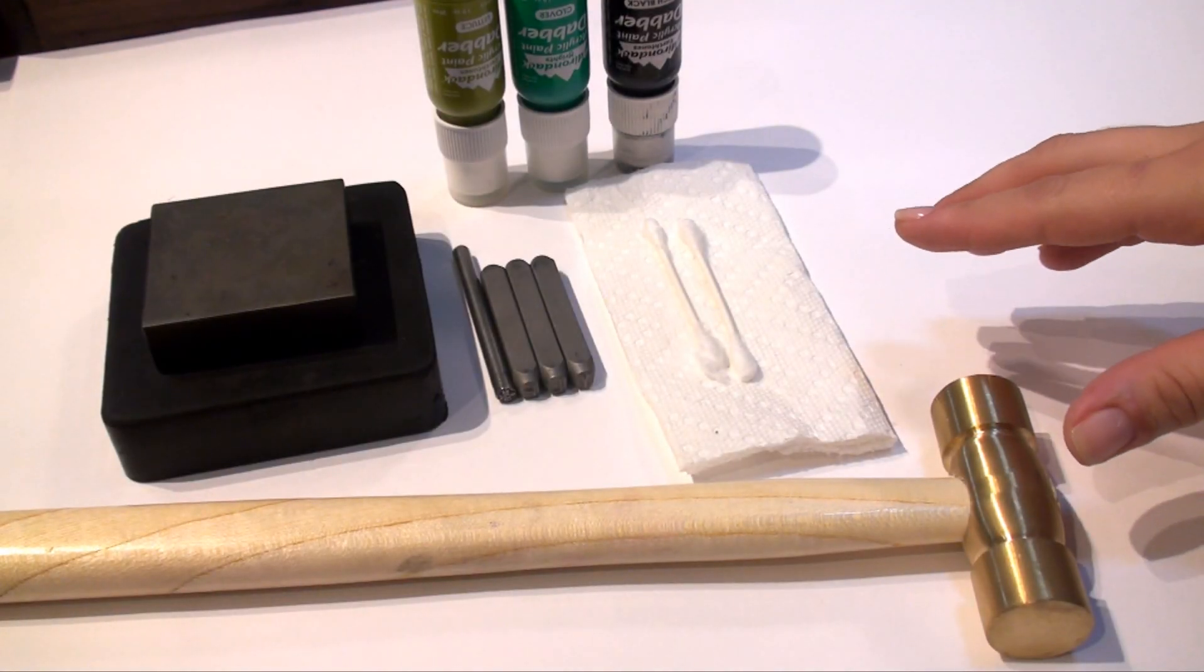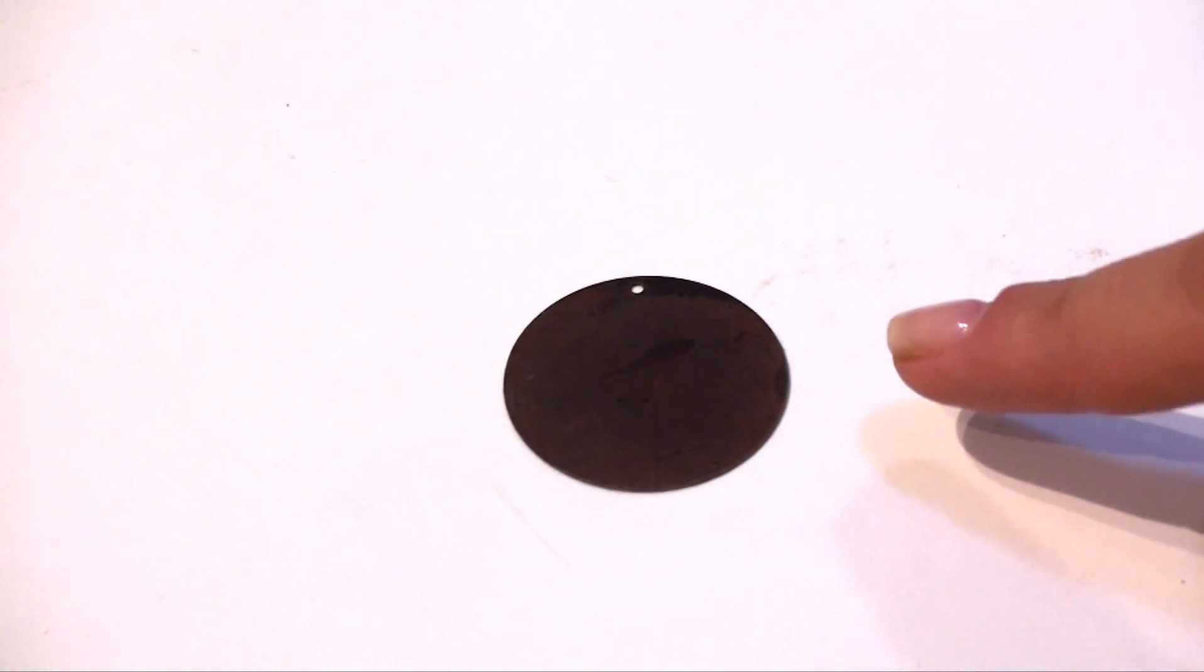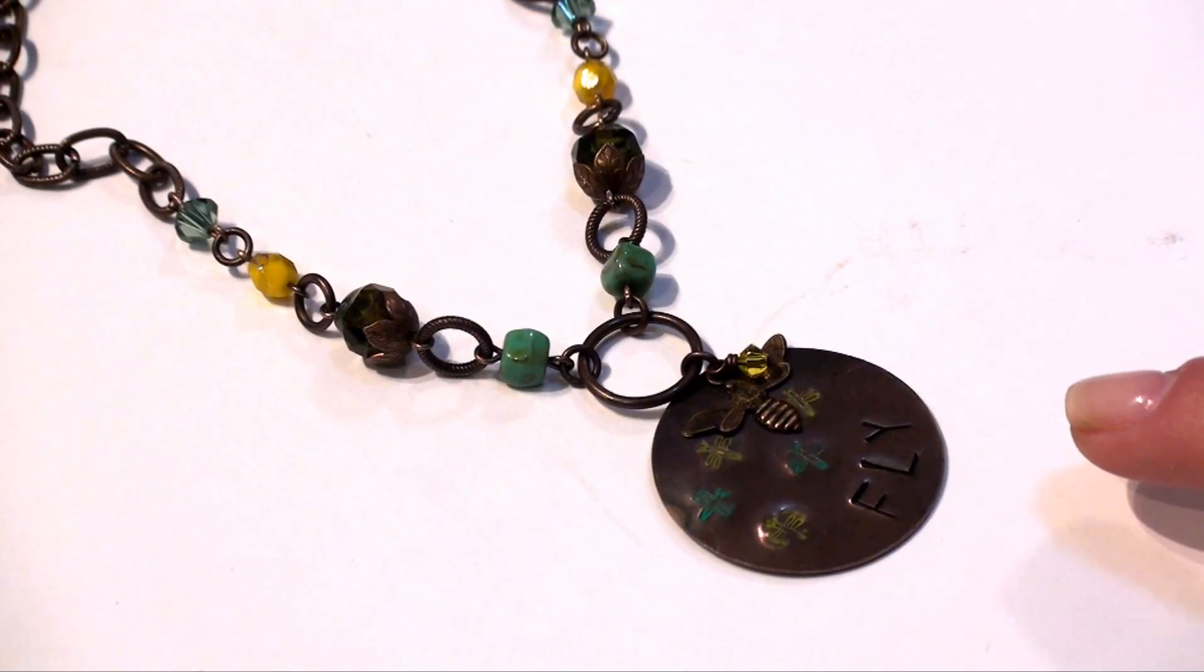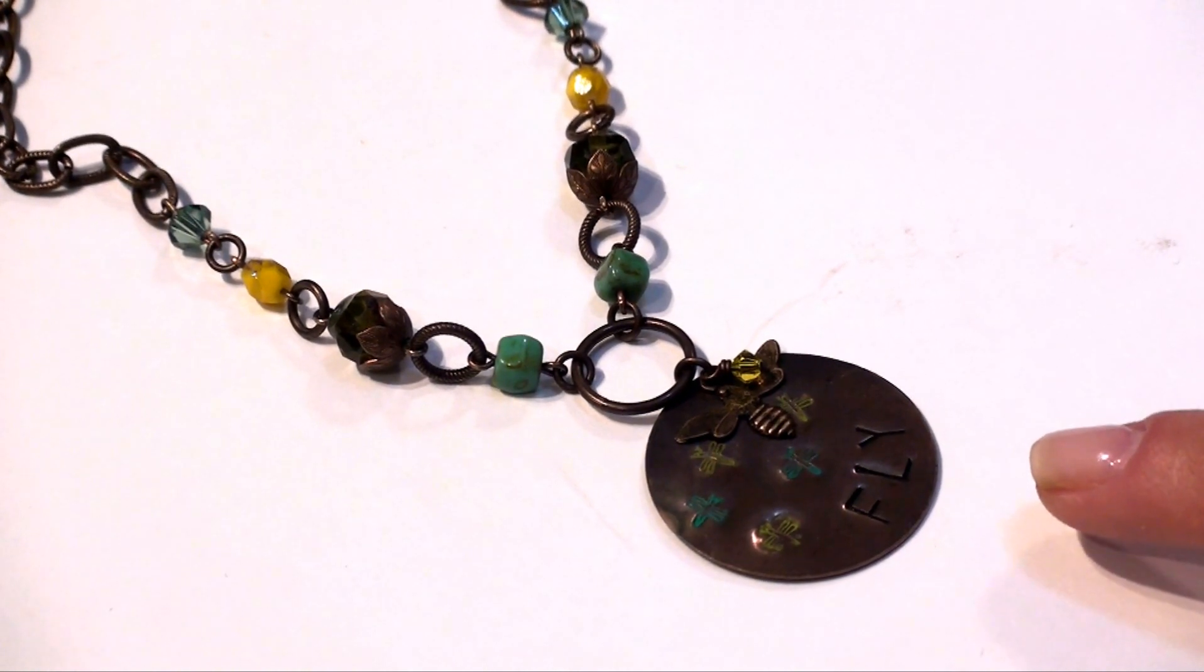Here are the tools we'll be using. The materials we'll be using is a large altered blank. This is the pendant we'll be creating with letter stamps and a design stamp.